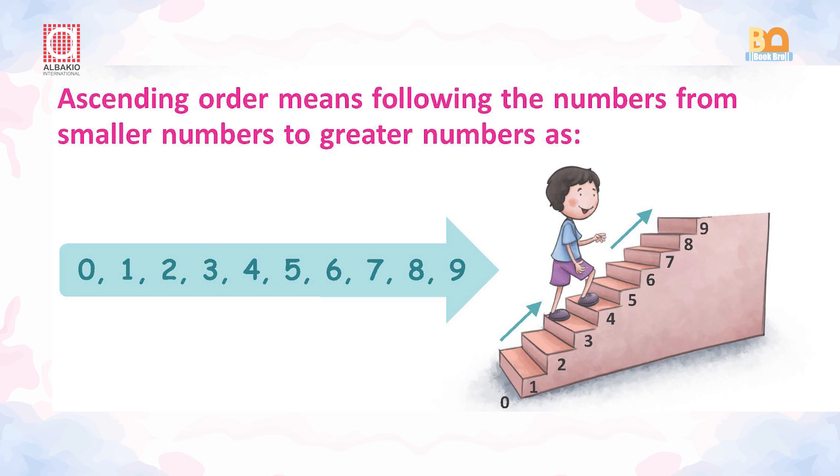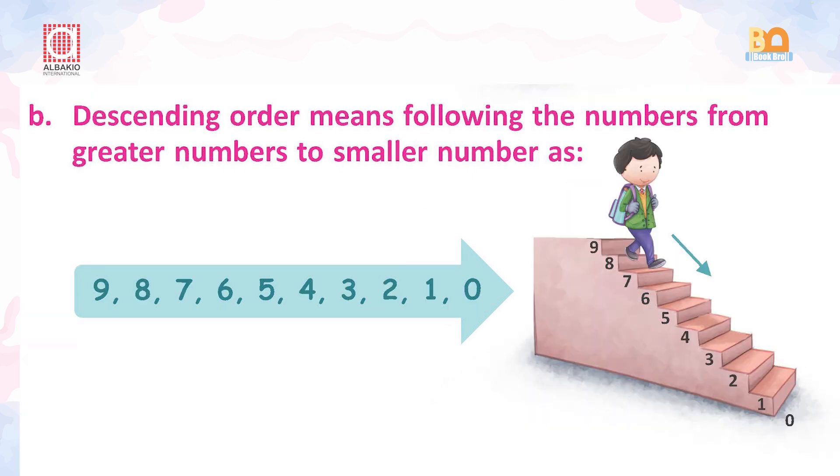When numbers increase from the smallest to the biggest, we call it ascending order. And when the number decrease from the biggest to the smallest, we call it decreasing order.